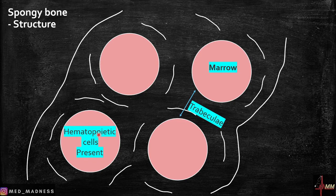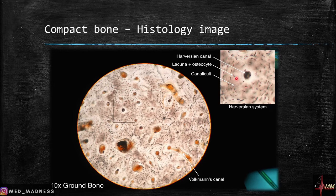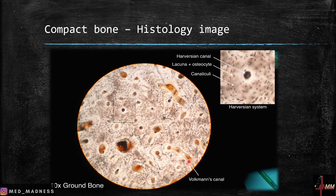Now let's look at the actual histology images of compact and spongy bone. In the compact bone histology you can see many osteons. Zooming into one osteon: here is the haversian canal surrounded by concentric lamellae. You can see osteocytes present in lacunae and canaliculi — fine canals interconnecting the lacunae. You can also notice Volkmann's canals interconnecting the haversian canals.